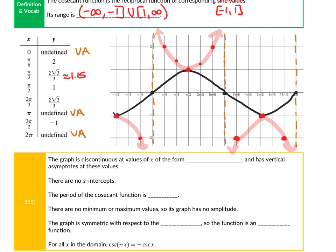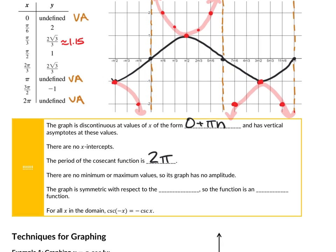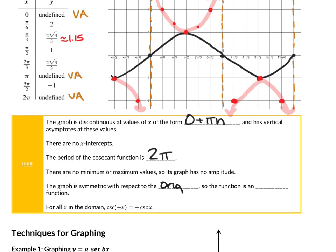The cosecant graph is discontinuous at x values of the form 0 plus pi times n — so 0, pi, 2 pi, 3 pi, and so on. It has no x-intercepts, because that's where sine touches the x-axis. The period of cosecant, like sine, is 2 pi. It has no maximum or minimum values and no amplitude, but the sine function that creates it does. It is symmetric with respect to the origin, making it an odd function: cosecant of negative x equals negative cosecant of x.